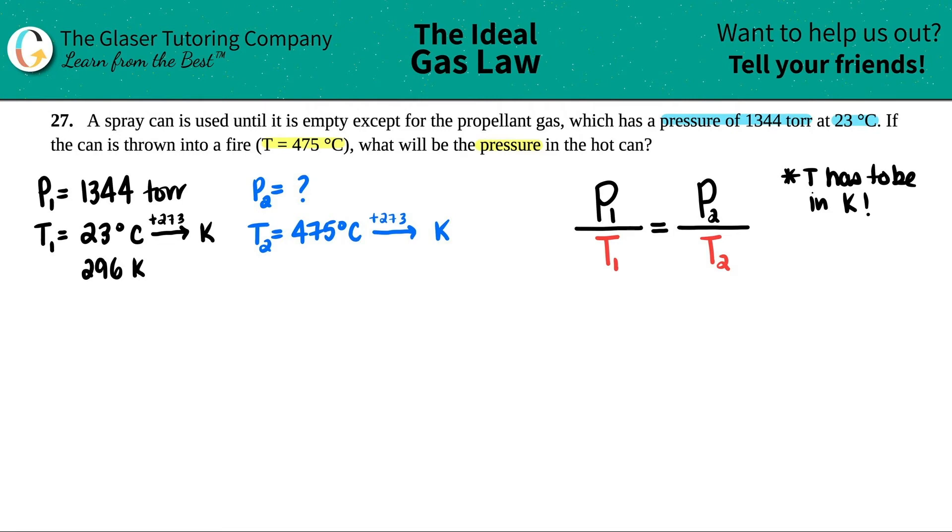And then for the other one, I have 475 plus 273, I get 748 Kelvin. Now we're ready. So I'm going to plug in my values, my P1s, T1s, and P2, T2s.